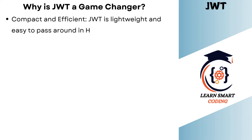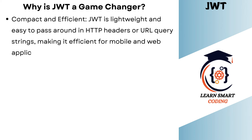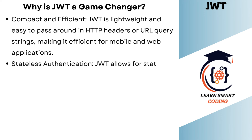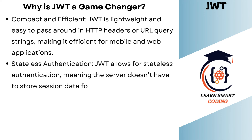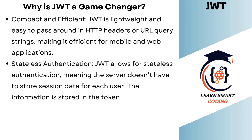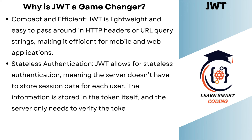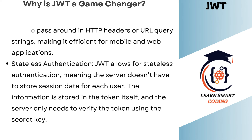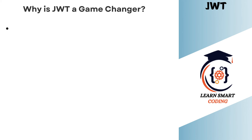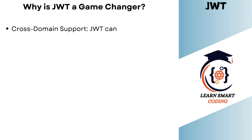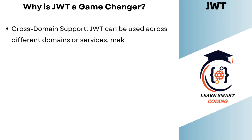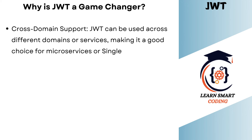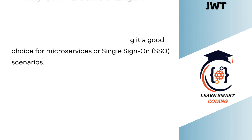Why is JWT a game changer? First, it's compact and efficient — JWT is lightweight and easy to pass around in HTTP headers or URL query strings, making it efficient for mobile and web applications. Second, it enables stateless authentication, meaning the server doesn't have to store session data for each user. Information is stored in the token itself and the server only needs to verify the token using a secret key. Third, JWT supports cross-domain use, making it a good choice for microservices or single sign-on (SSO) scenarios.